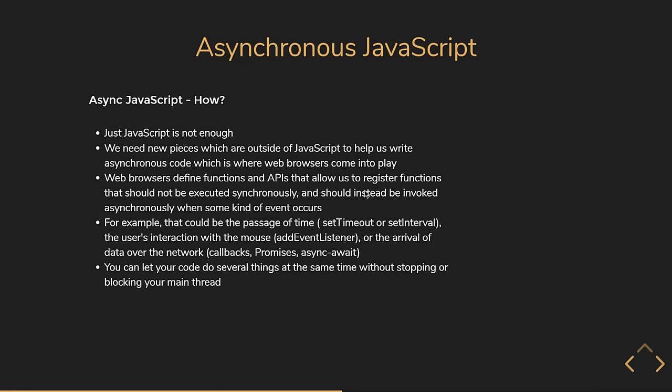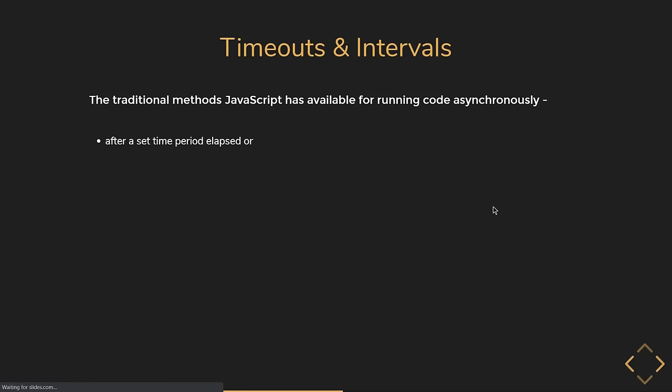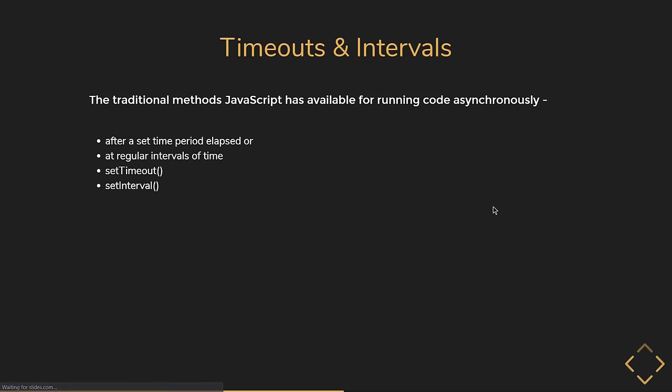I hope you now have a fair understanding of the what, why, and how of async JavaScript. In the next lecture, let's begin with the traditional methods JavaScript has available for running code asynchronously — namely timeouts and intervals. Let's look at the traditional methods for running code asynchronously after a set time period has elapsed or at regular intervals of time — specifically, the setTimeout function and the setInterval function.